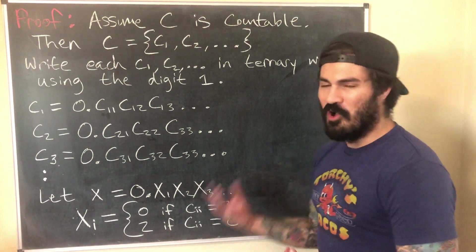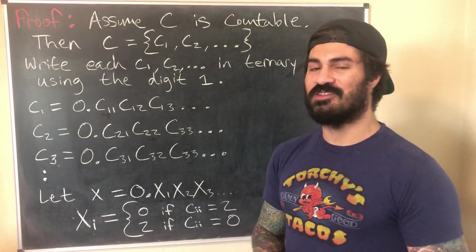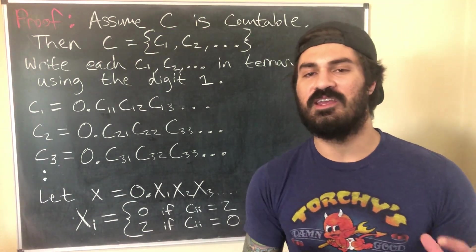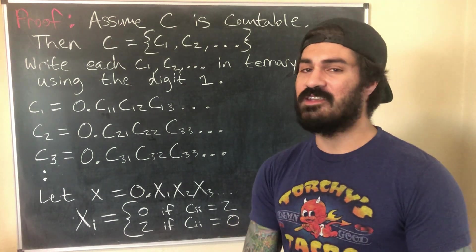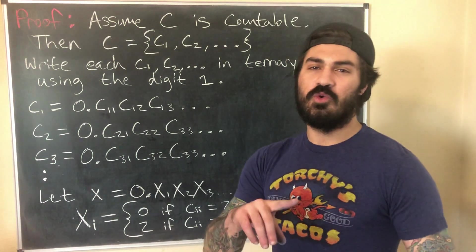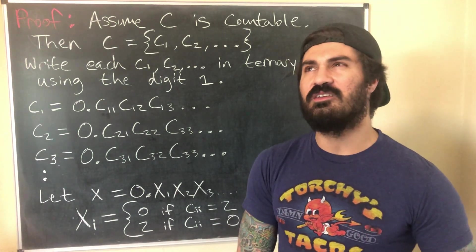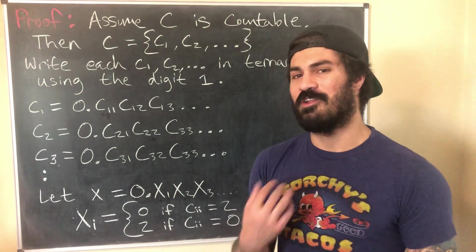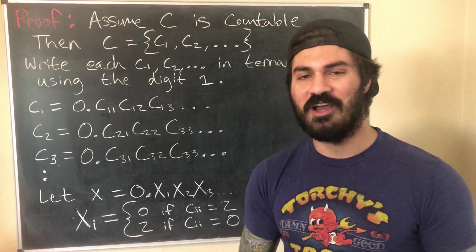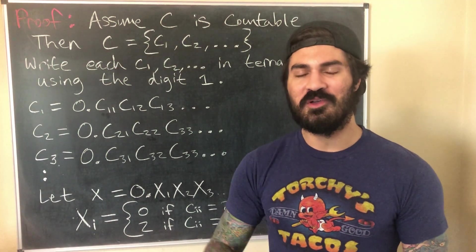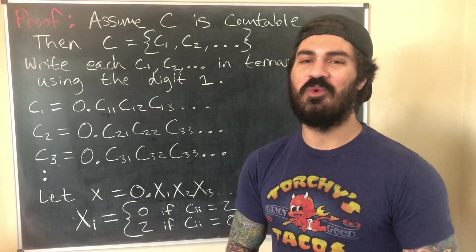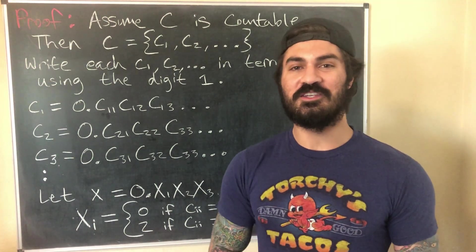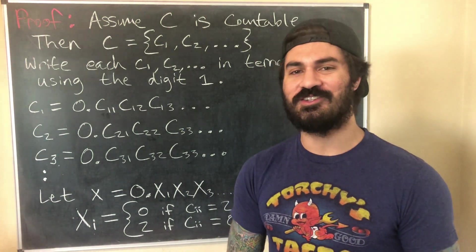This proof is very similar to the proof that the real numbers are uncountable — we just use ternary instead of base 10. The Cantor set has several other interesting properties: it contains no intervals, no isolated points, and is completely disconnected. Maybe I'll make a part two covering those. Thanks for watching — leave feedback below, and I'll see you all later.